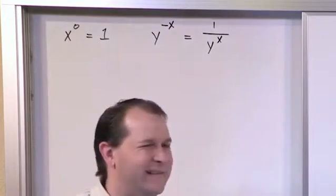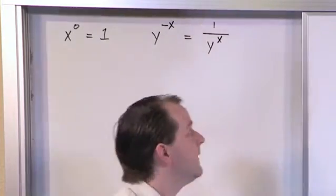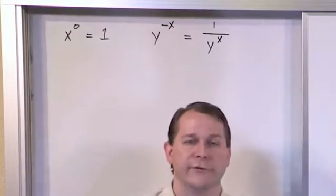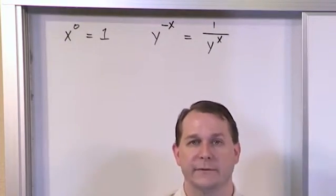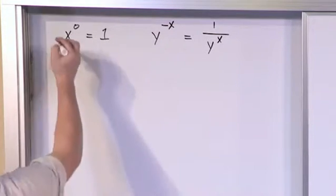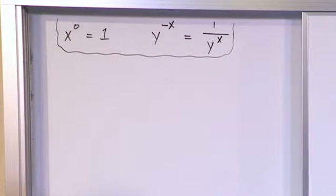So a negative exponent basically just means you move it down below the fraction bar. If there's nothing there, then you just move it below a one. If it's involved in a larger fraction, you just move it downstairs to the bottom of the fraction, and you make the exponent positive when you do that. So these two things are so important that I'm going to actually leave them on the board for a few minutes while we do a couple of our initial problems. Let's start small.